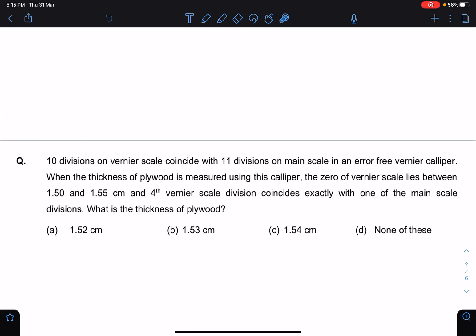10 divisions on vernier scale coincide with 11 divisions on main scale in an error-free vernier caliper. When the thickness of plywood is measured using this caliper, the zero of vernier scale lies between 1.50 and 1.55 centimeters.